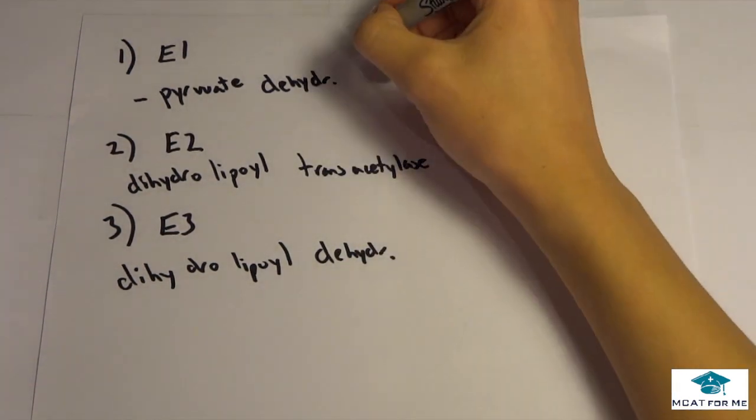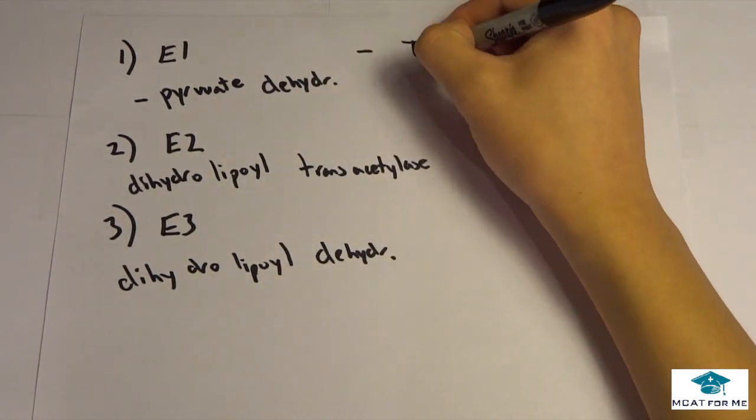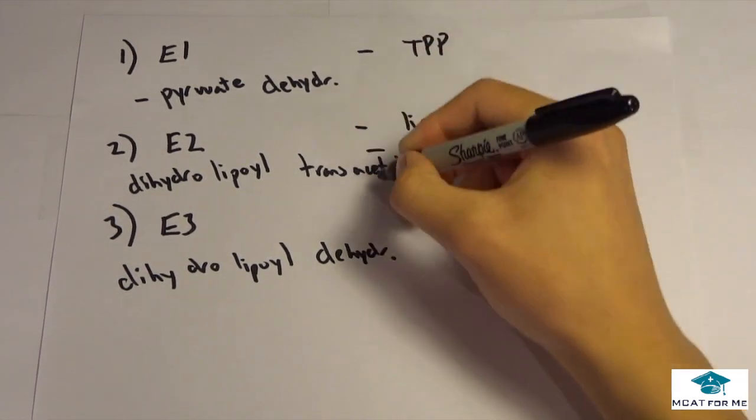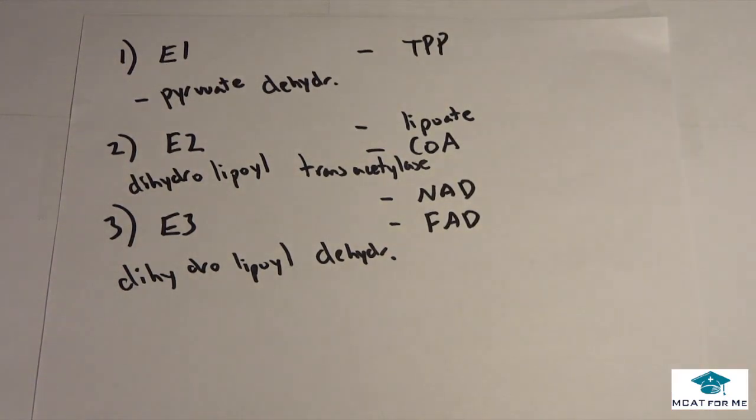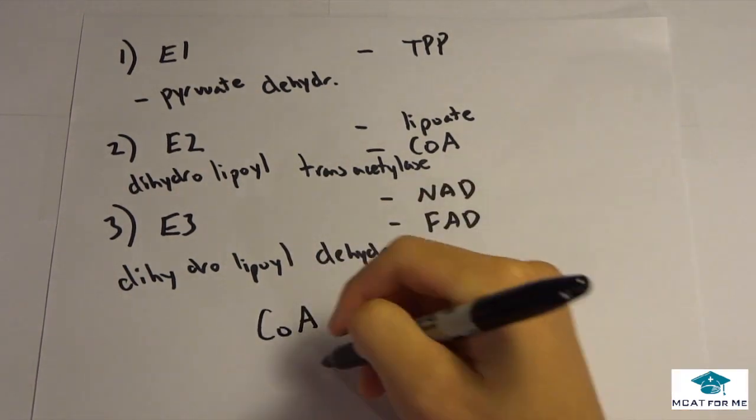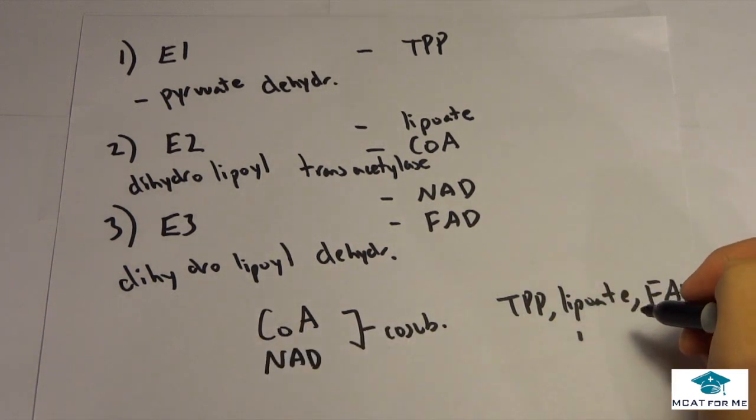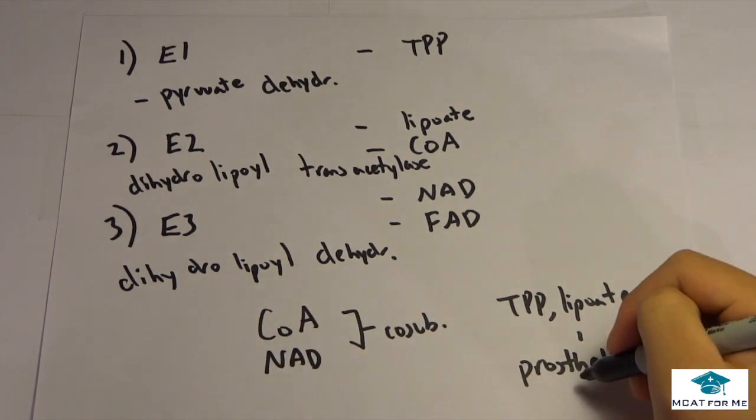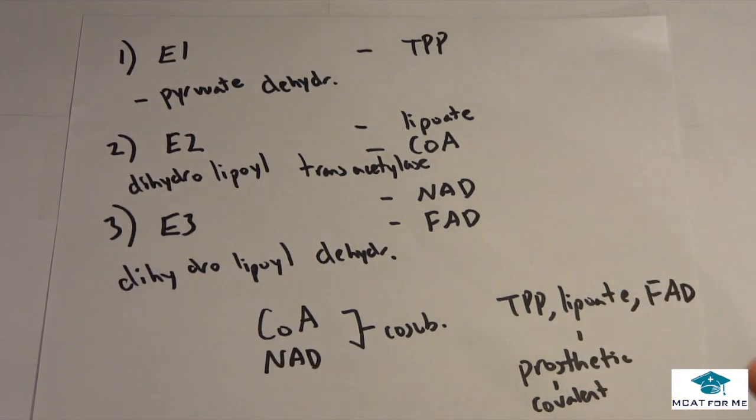And so in E1 we have different coenzymes within each of these different segments. In E1 we have TPP. In E2 we have lipoate and also CoA. And in E3 we have NAD and also FAD. And so just for reference, CoA and also NAD are co-substrates. TPP, lipoate and FAD are all prosthetic groups. Prosthetic group means covalent bond to the enzyme. And co-substrate is free to interact and move around.